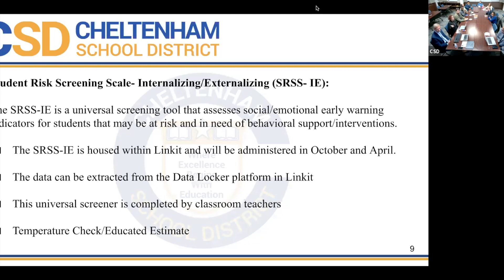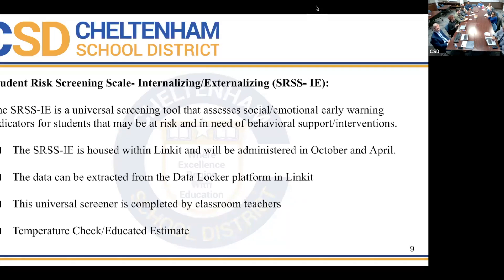We're also working with the intermediate unit this year on a more individualized personal screening scale. After this universal screener is complete, we'll have a larger conversation with them about connecting it to an individual screener. If a student is high risk and we have additional early warning indicators — including parent and student input along with SWIS data — we can implement an individual screener that drives what specific support we provide.